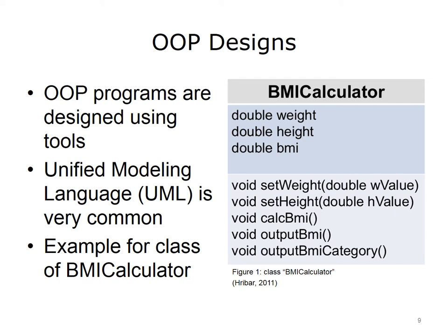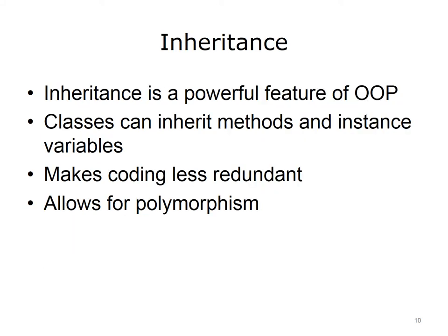Inheritance is a very powerful feature of OOP. It allows us to define classes based on the definitions of other classes. Classes can inherit methods and or instance variables from another class, which leads to a lot less code redundancy. Another powerful feature of inheritance is polymorphism. The basic idea is that the same method call will trigger different methods to run based on the class type of the object. It is not necessary to fully understand polymorphism at this time, but it is important to know that it is possible with OOP and inheritance.